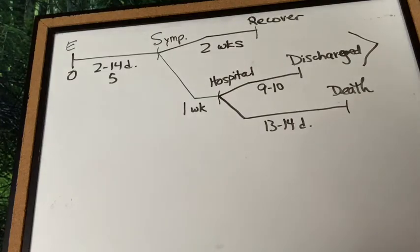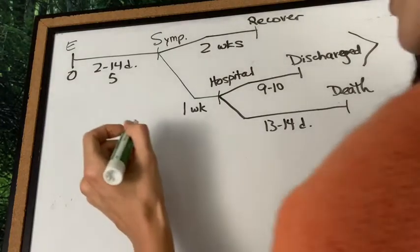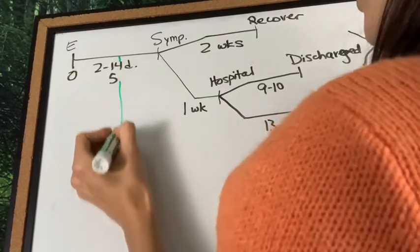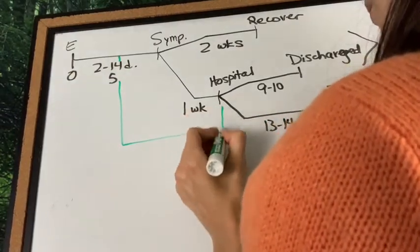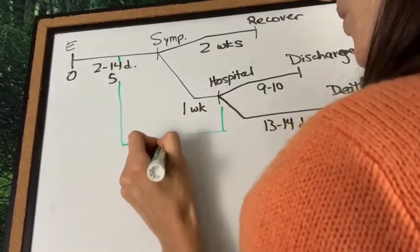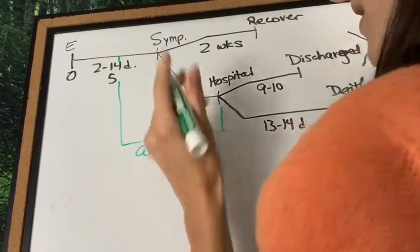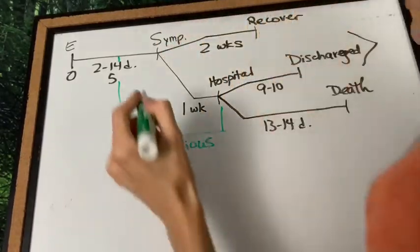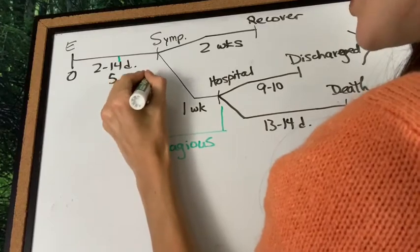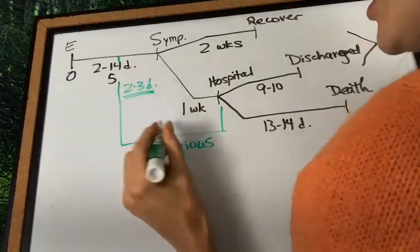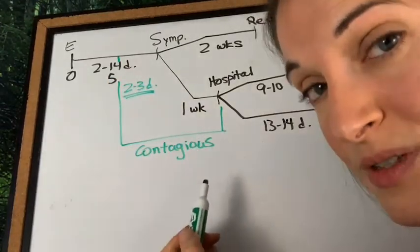Okay. Now, you've heard about pre-symptomatic and asymptomatic spread. And basically, when somebody is most contagious, there's pretty good evidence now that seems to show that it's about two to three days before symptoms start, up to about a week after symptoms begin.